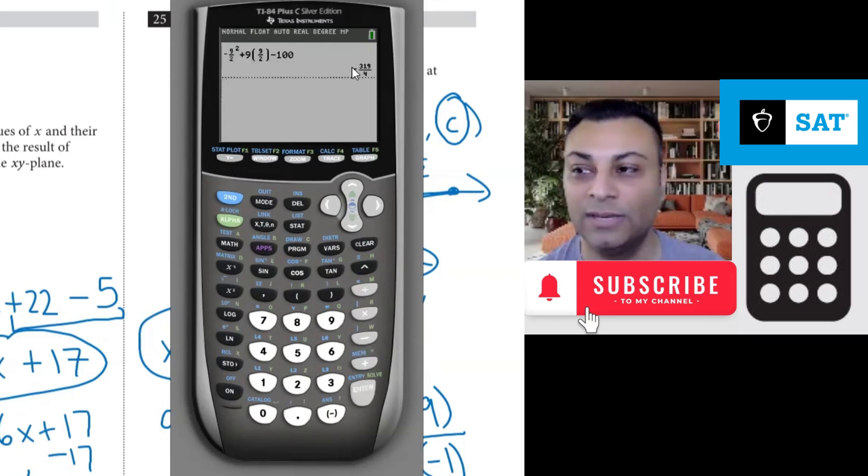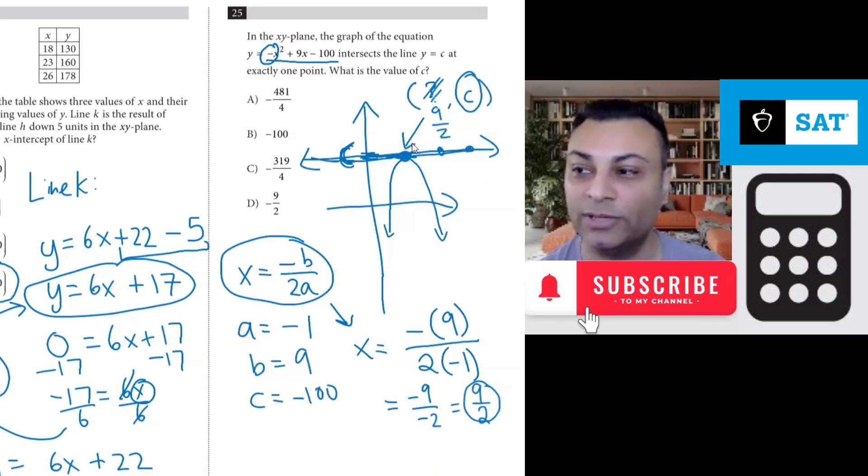And you get an answer of negative 319 over 4. So this coordinate here is negative 319 over 4 which is option c. So the answer is c.